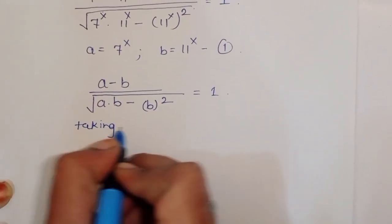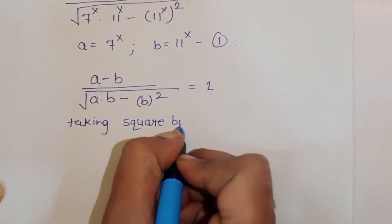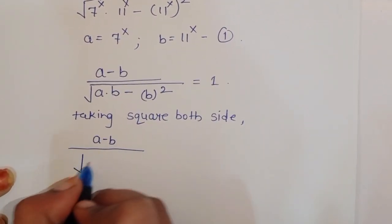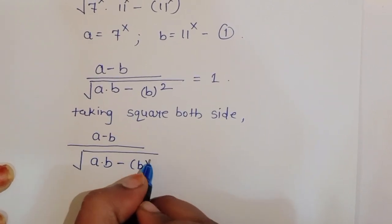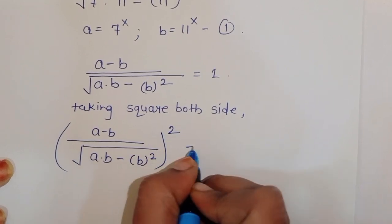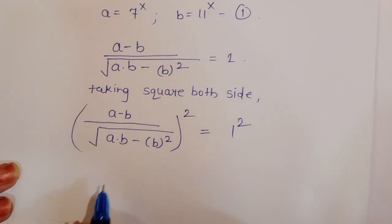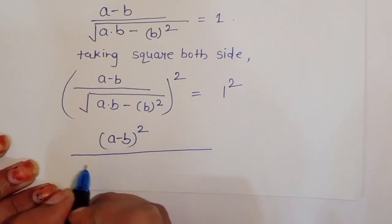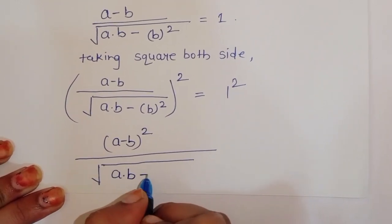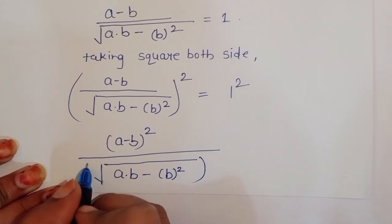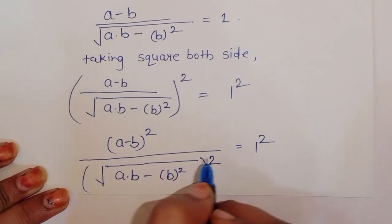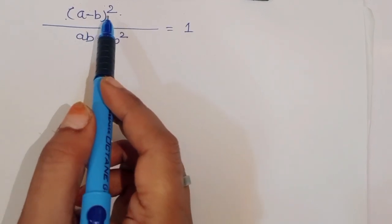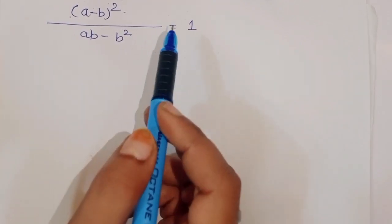Now, substituting: a minus b divided by the square root of ab minus b squared, equals 1. Taking the square of both sides, we get a minus b divided by the square root of ab minus b squared, whole squared, equals 1 squared. This simplifies to a minus b whole squared, divided by ab minus b squared, equals 1. The square cancels with the square root.